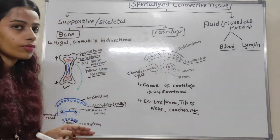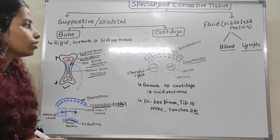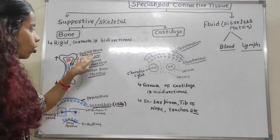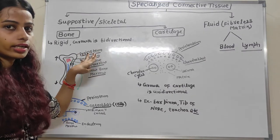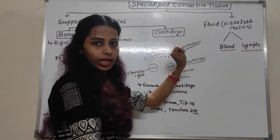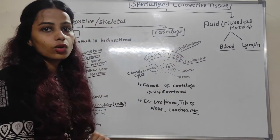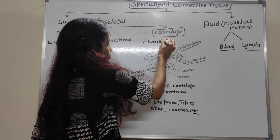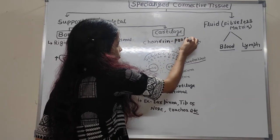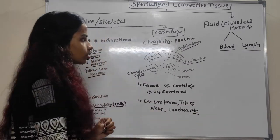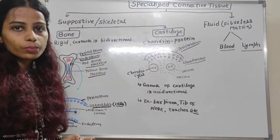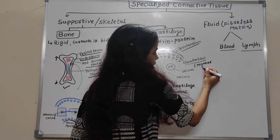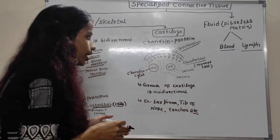Looking at the figure of cartilage, the upper part is known as perichondrium. The prefix 'osteum' relates to bone, while 'chondrium' relates to cartilage. Chondrin protein is present in cartilage. After the layer of perichondrium, there are chondroblasts which are known as mother cells for cartilage. Chondroblasts form chondrocytes after division.